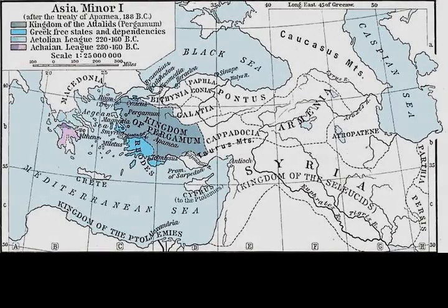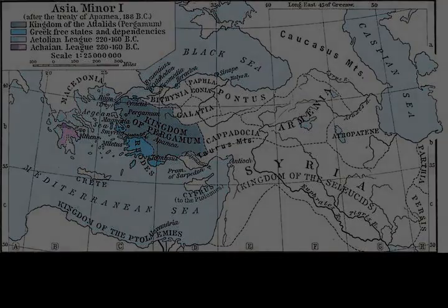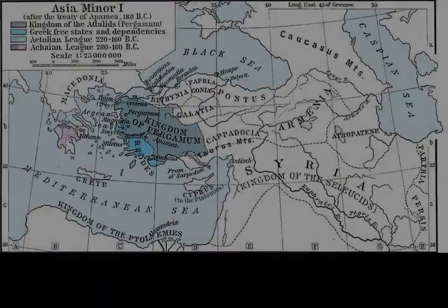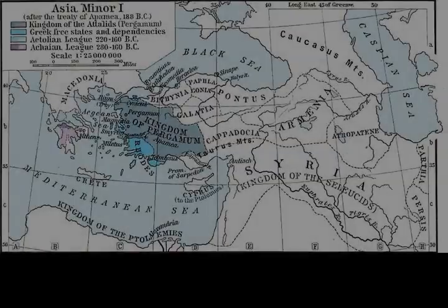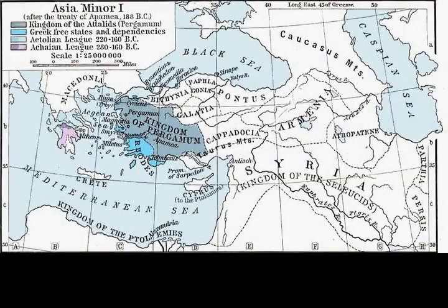In 196 BC, Antiochus used the opportunity of Attalus I's death to assault cities controlled by the Attalid dynasty of Pergamon. Fearing that Antiochus would seize the entirety of Asia Minor, the independent cities Smyrna and Lampsacus decided to appeal for protection from the Roman Republic.